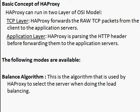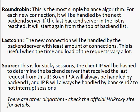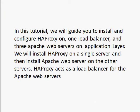HAProxy has different types of algorithms used for balancing. The first is the balance algorithm, the second is round robin, and then least connection. If you want more algorithms, you can check the HAProxy website for more details. In this tutorial, we are going to install and configure HAProxy with one load balancer and three Apache web servers, using the balance round robin algorithm.